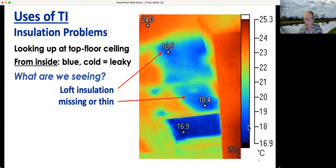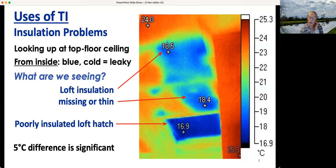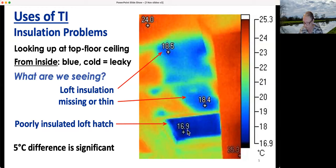You'll notice the colour scale. We tend to use the same palette: red is hot, blue and black is very cold, and greeny yellows are in the middle. The poorly insulated loft hatch reads 16.9 degrees, while the main ceiling is at 24 — that's a seven degree temperature difference, which is a lot. The missing insulation is also pretty bad. If it's just one or two degrees difference on a small area, you wouldn't worry about it.